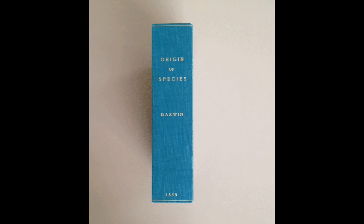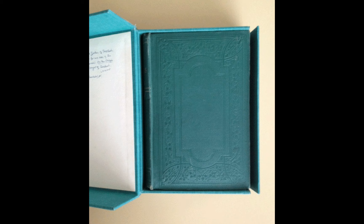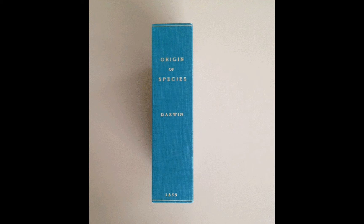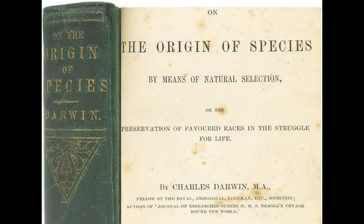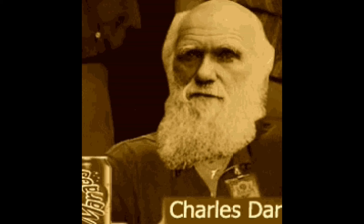These observations led to Darwin writing a book, which he published in the year 1859, called On the Origin of Species by Means of Natural Selection. This publication convinced many scientists that evolution did exist and that it developed through natural selection.